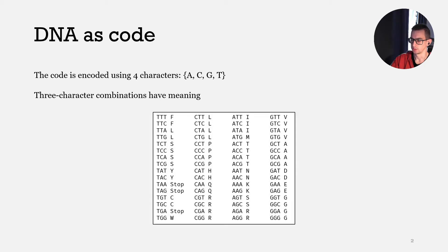In this video we will talk about the problem of determining an open reading frame. This is a task from your homework, so in this video we will not be talking about biology. We will view DNA as a code, and this code is based on four characters: A, C, G, T. Three character combinations have meaning.